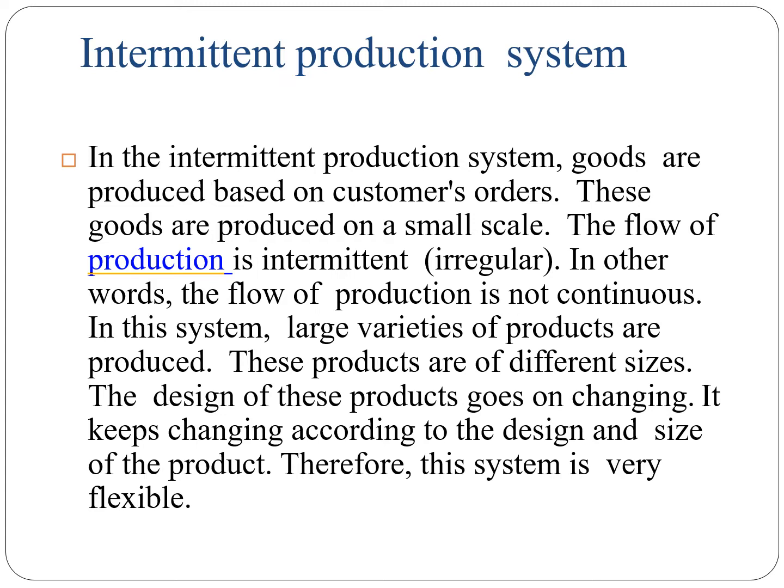In the intermittent production system, the flow of production is not continuous. A large variety of products are produced. These products are of different sizes and the design of these products goes on changing — it keeps changing according to the design and size of the product. Therefore, this system is very flexible. On the next slide, we have seen some examples of intermittent products: goldsmith and tailor.